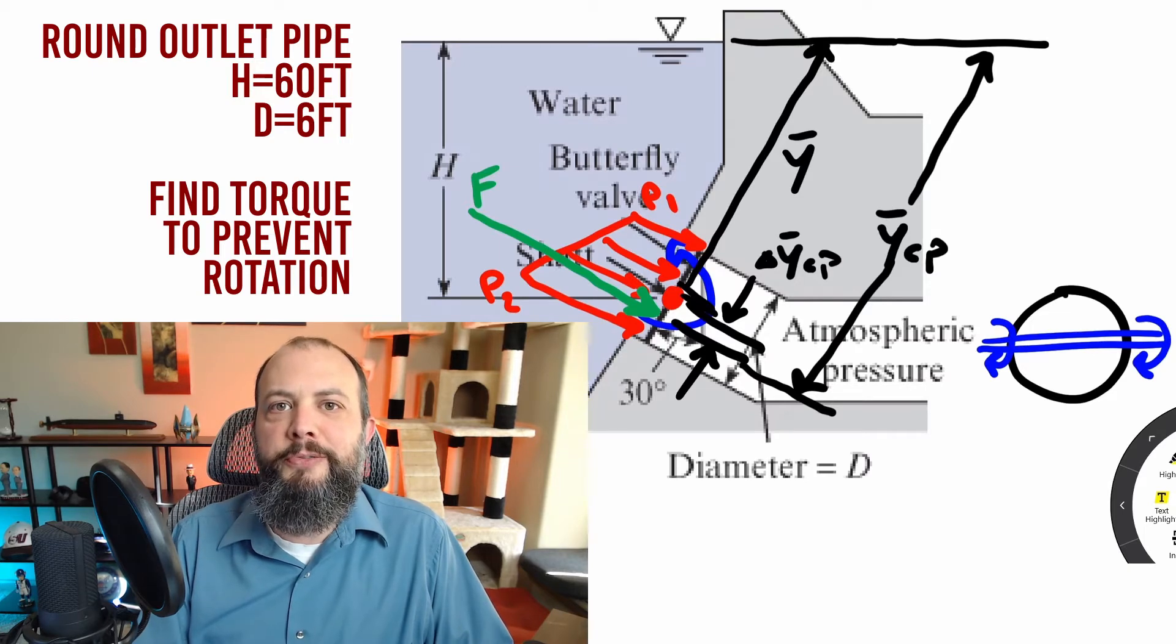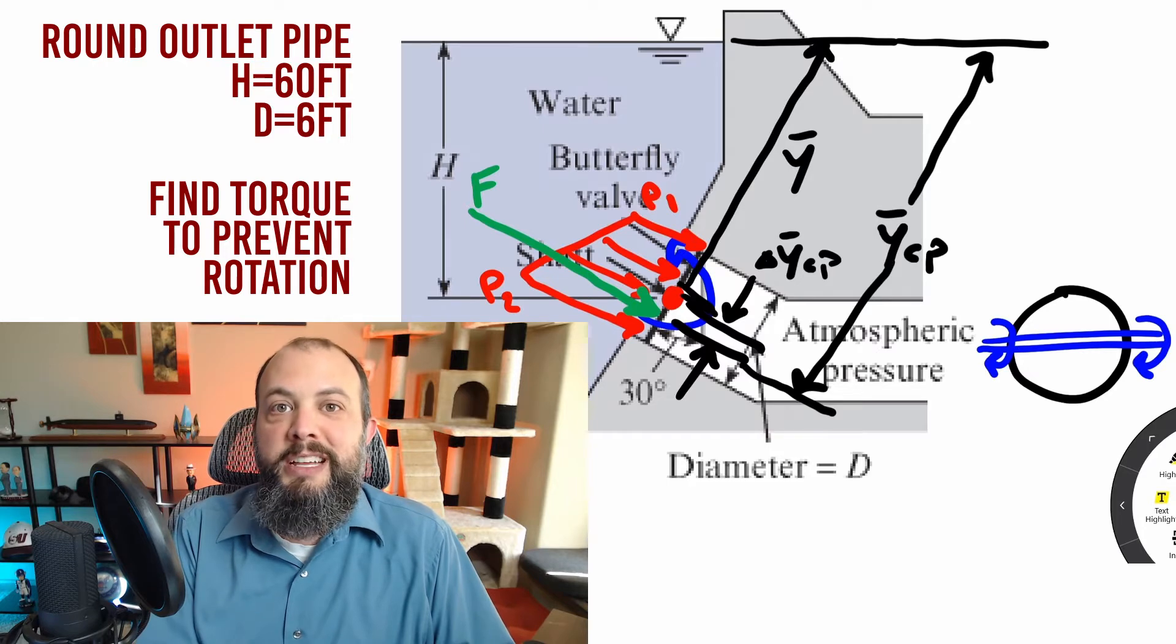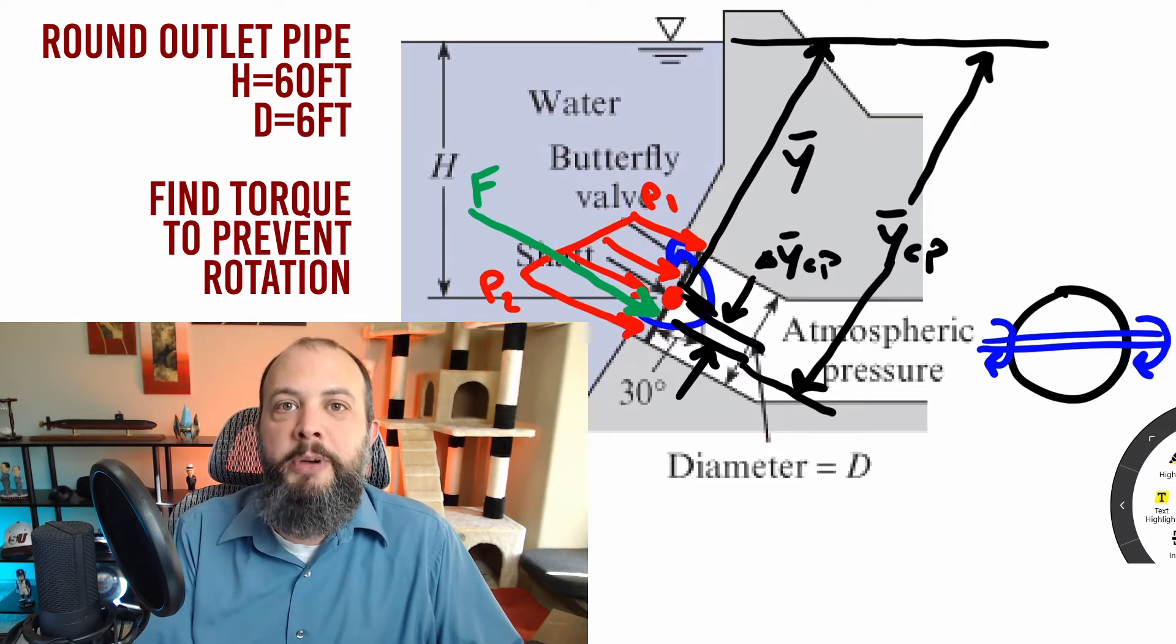Y bar is the slant distance from the centroid up to the surface of the water. Y bar CP would be the slant distance down to the center of pressure. Delta Y bar CP is how far below the centroid the center of pressure is located. This problem is asking us for torque about that center. Fortunately, we can figure out that torque without any angles. It's just a scalar force times distance because pressure always acts perpendicular to the surface. If this is helping you so far, don't forget to hit the thumbs up button.